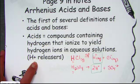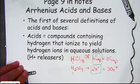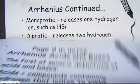That's the first of our definitions on the Arrhenius side. If it starts with an H, it's an acid. Acids have a special set of rules for naming them.